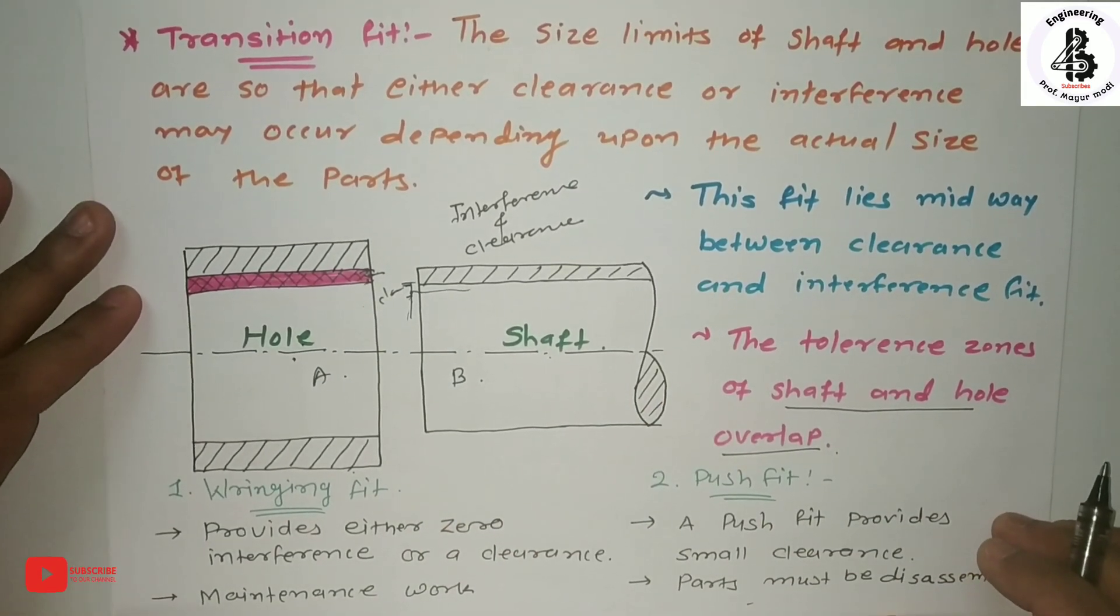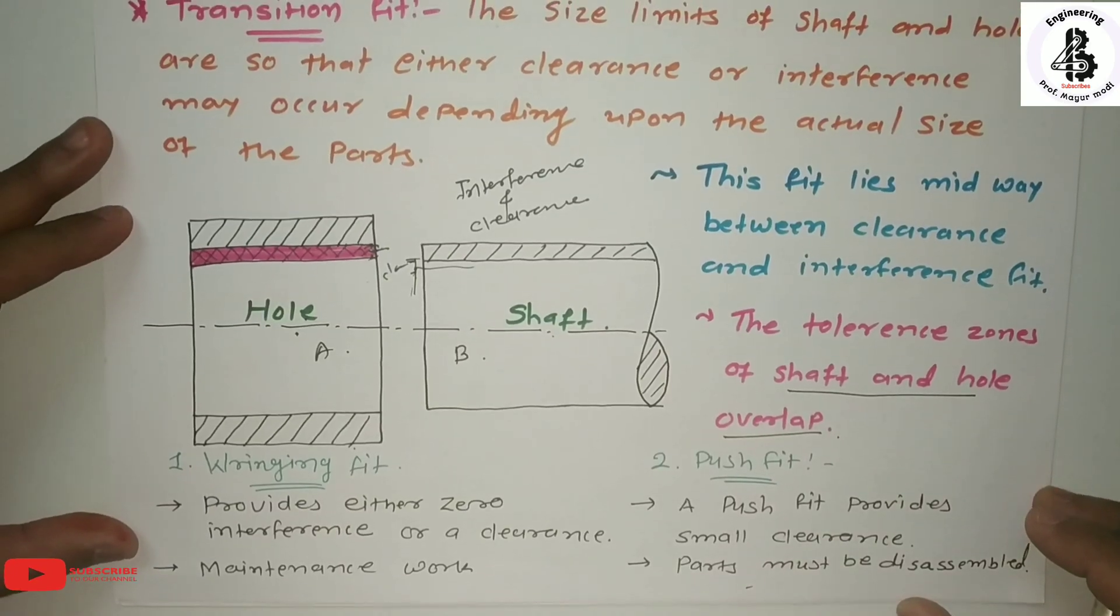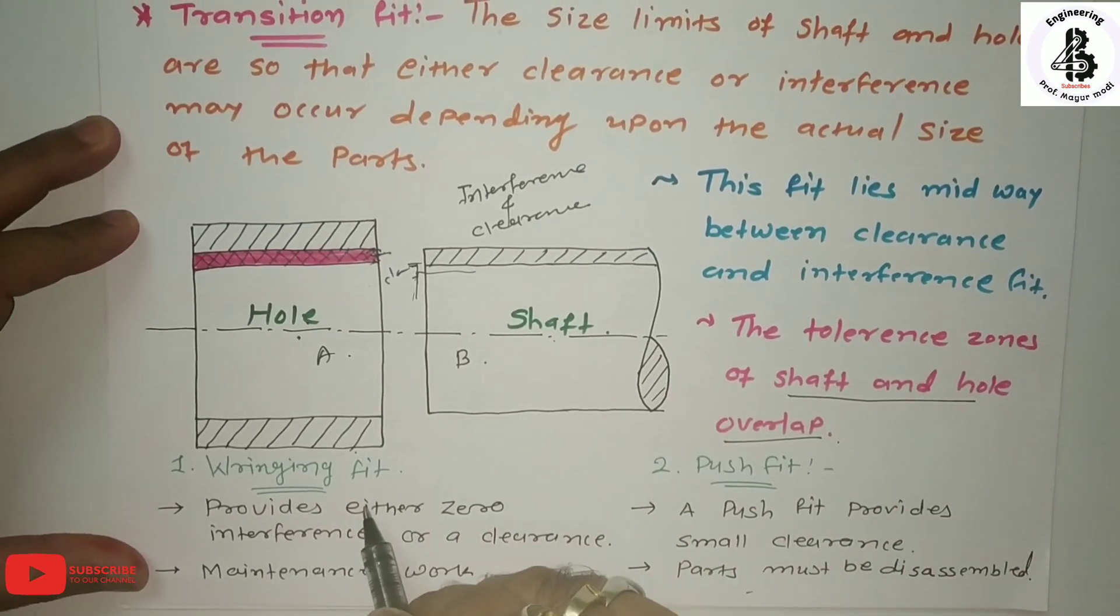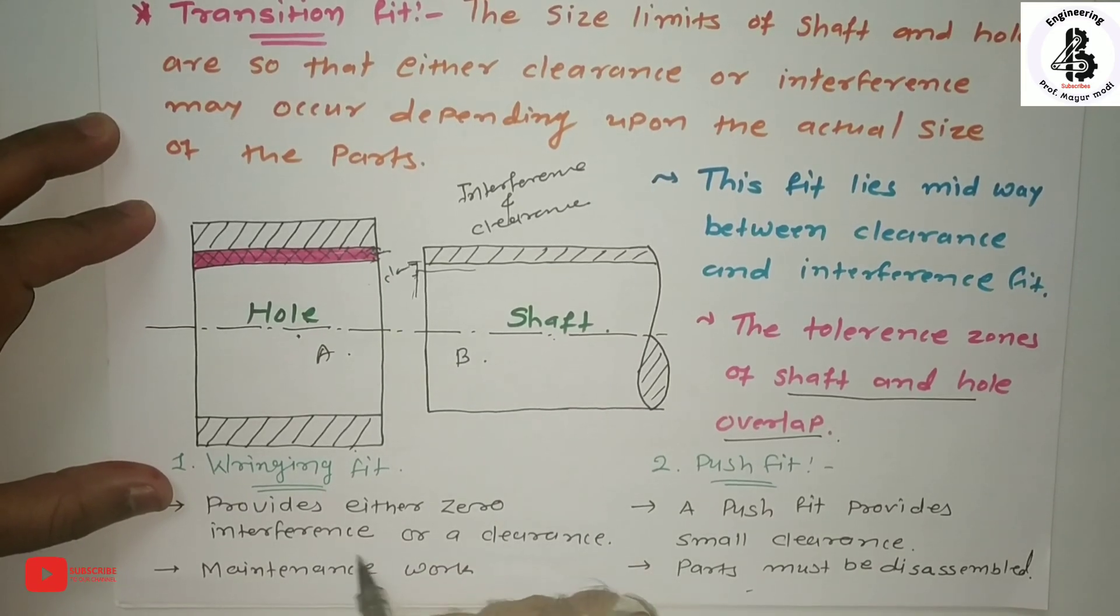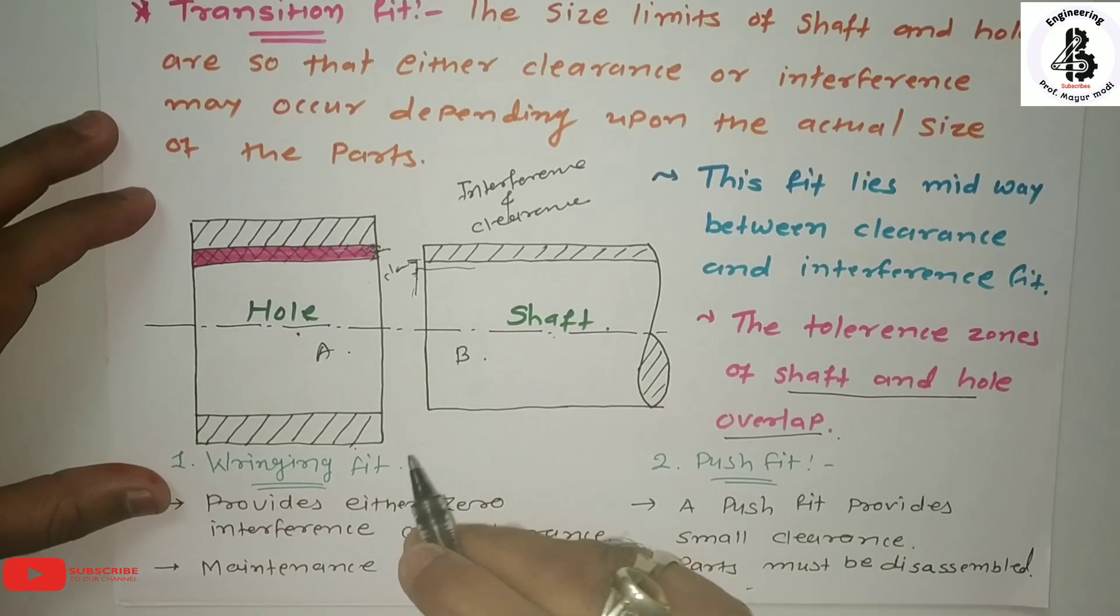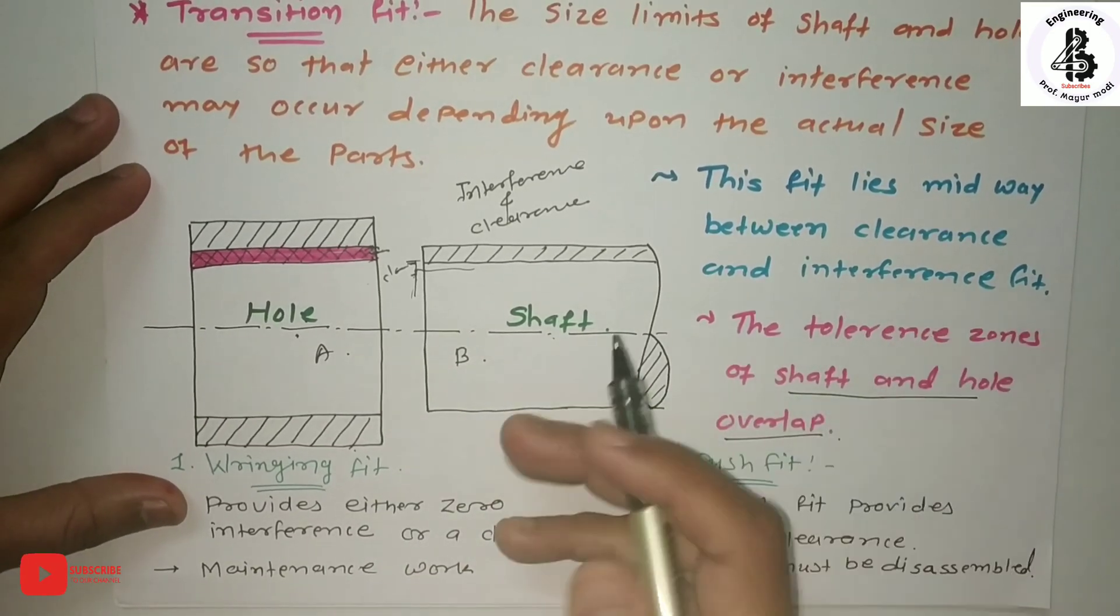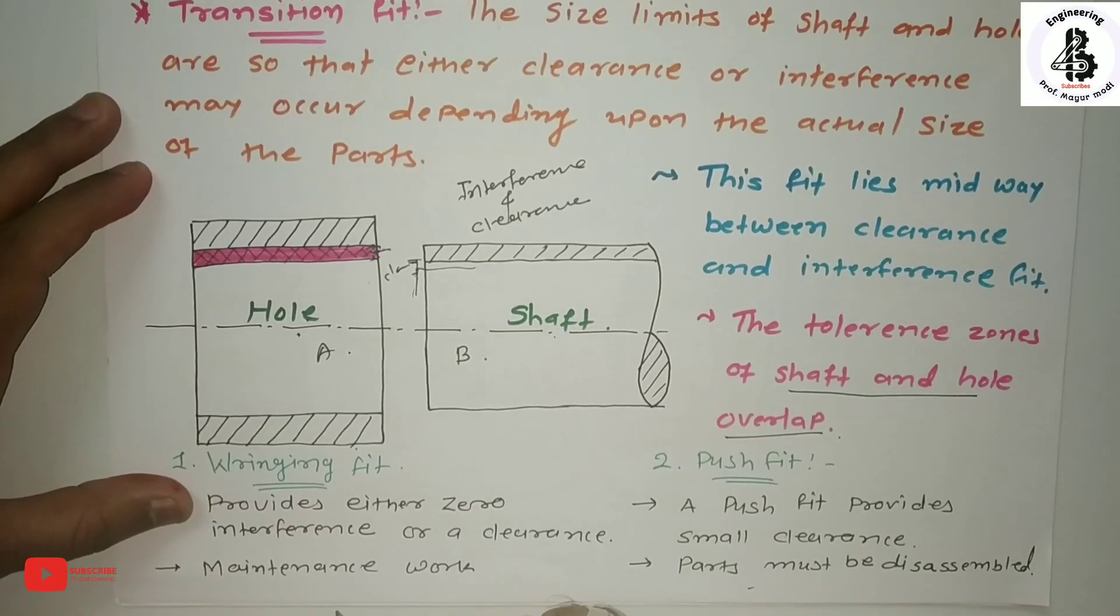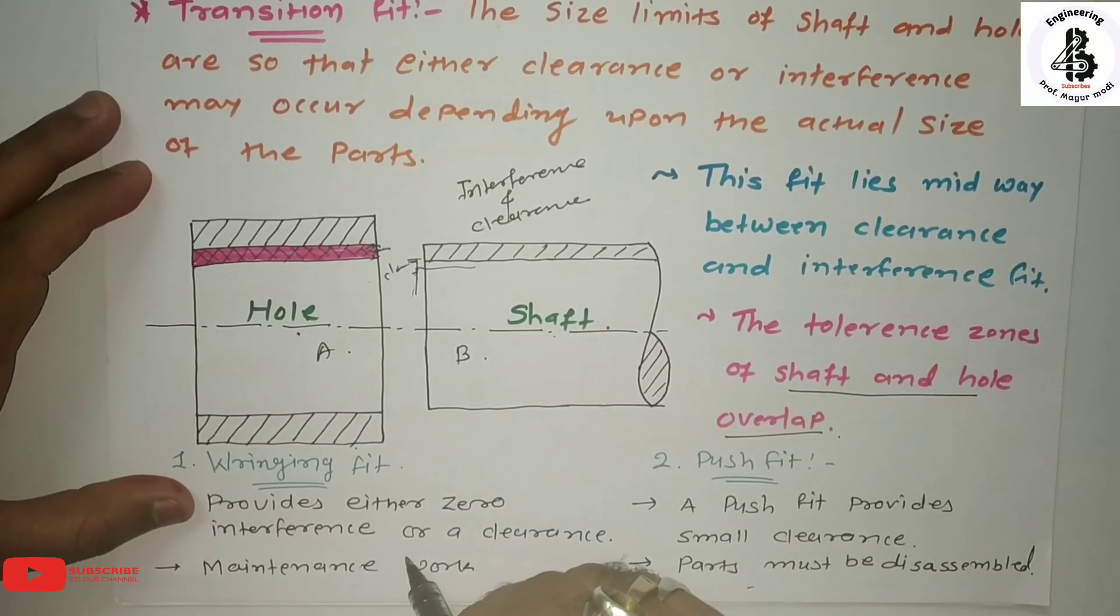A ringing fit provides either zero interference or a clearance. You can ring it, slide it, and fit the parts with each other. Generally, it's used for maintenance work. And the second type is push fit.